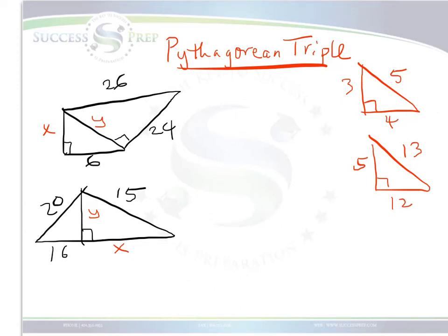Most people understand that to find any side of a right triangle, you can use the Pythagorean theorem: A squared plus B squared equals C squared.